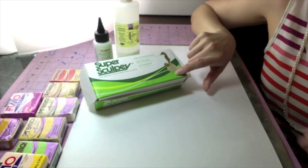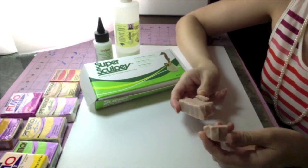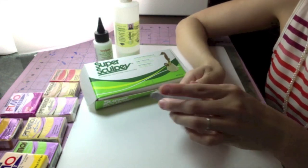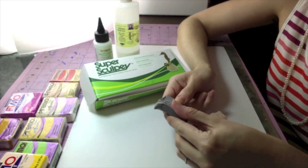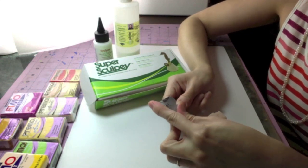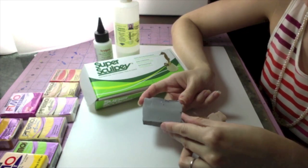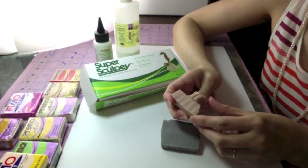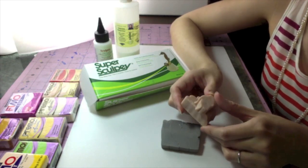Super Sculpey is great if you are planning to paint it afterwards. It either comes in a pinkish beige color or a more firm gray color, and both are great for different things. I personally prefer the gray because I like the sharp edges it gives you. But if you want more smooth, organic shapes, the beige kind, which is the softer kind, is the way to go.